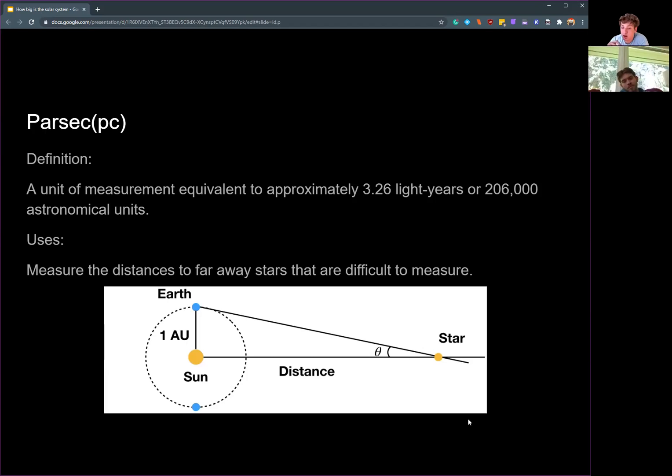When that angle is equal to one arc second, this distance here on the bottom, the distance from the Sun to the distant star, is one parsec. So really, all you need is the angle created here and the astronomical unit, which we already have, to find the distance in parsecs.